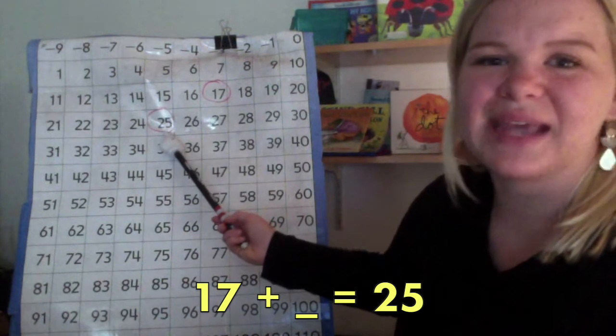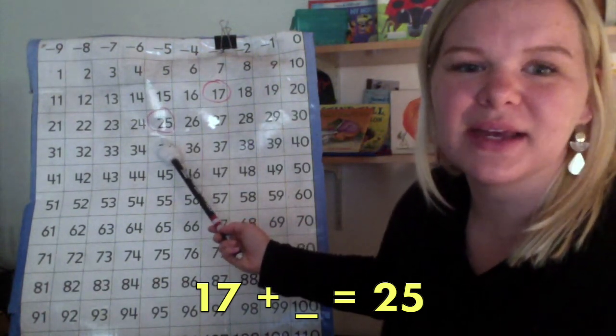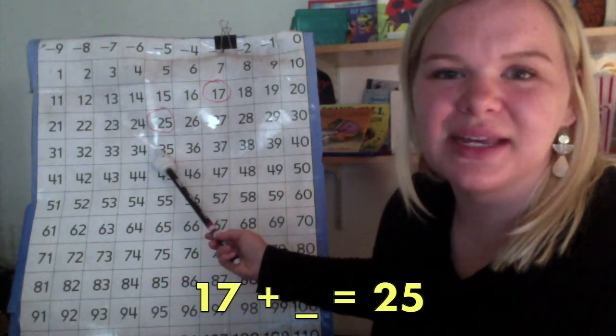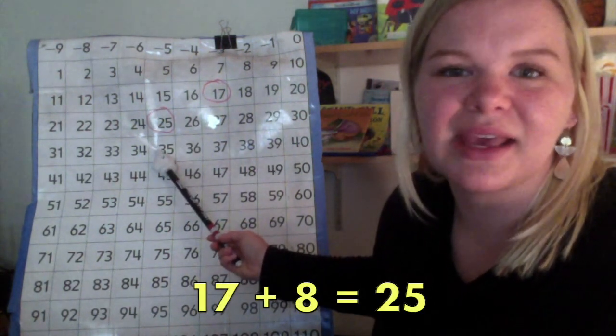It took us 8 hops to get from 17 to 25. So, we can say that 17 plus 8 equals 25.